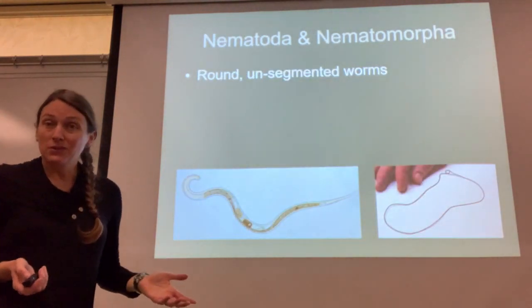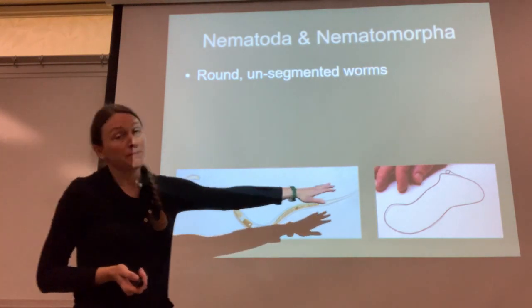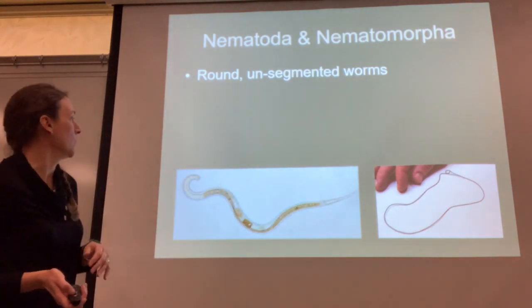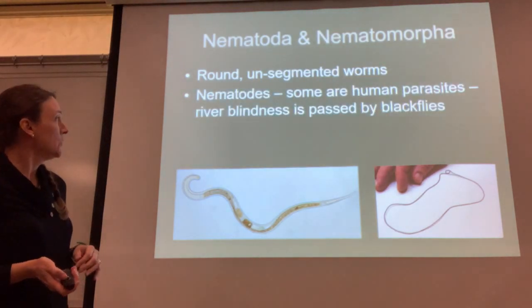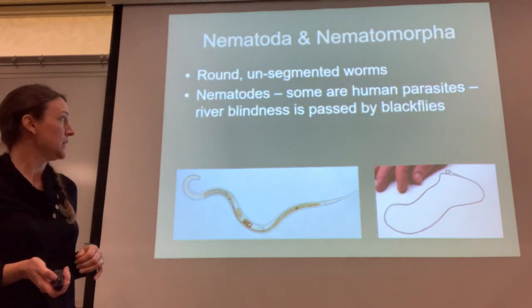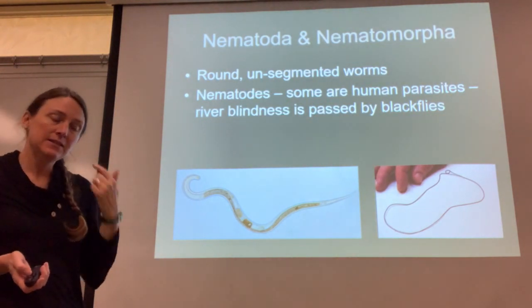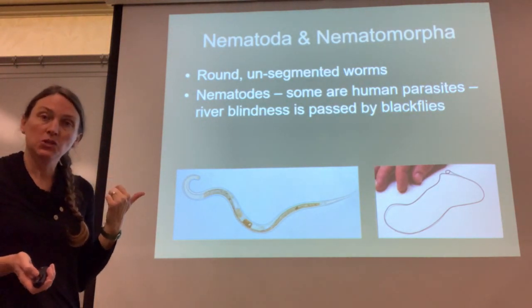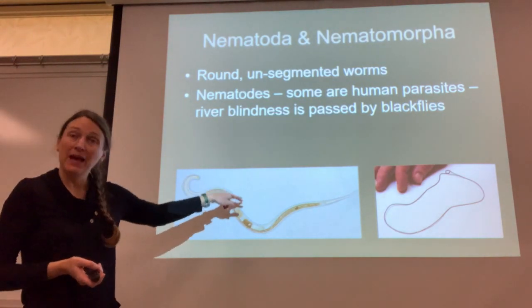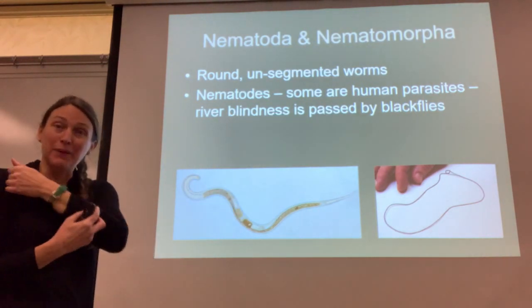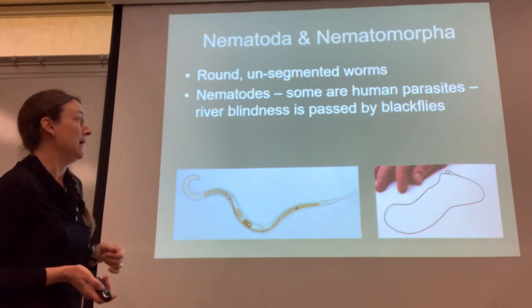A lot of nematodes are also parasitic. Here we have Nematoda and Nematomorpha, which is a horsehair worm — they're round, unsegmented worms. Nematodes can be human parasites; for instance, river blindness attacks people's eyes and causes them to go blind. It's actually caused by a nematode passed through a black fly bite.